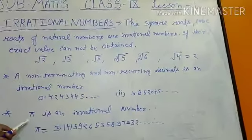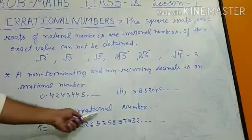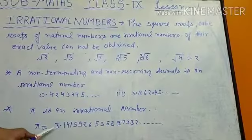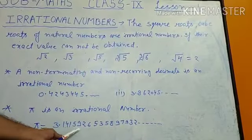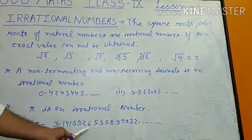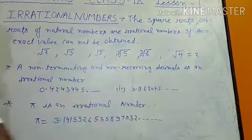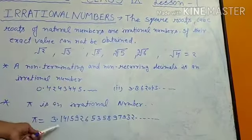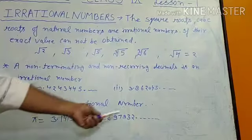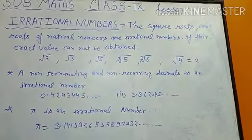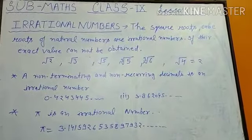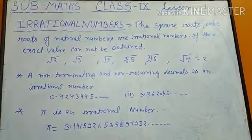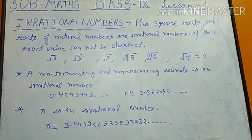Pi is also an irrational number. Why? Because the value of pi is 3.14159265... and it goes on endlessly. It is not a complete or terminating answer — it is a non-terminating decimal. That is why pi is an irrational number.